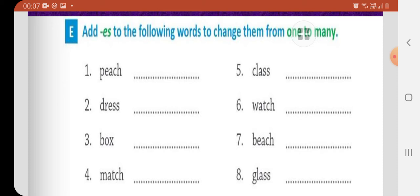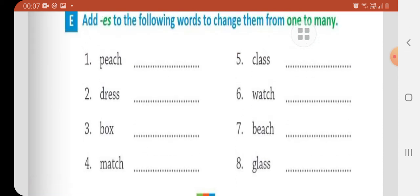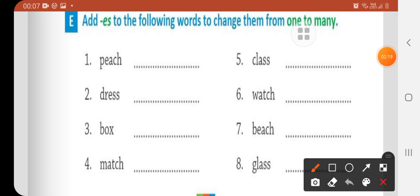Add es to the following words to change them from one to many. Children, you will see here. All nouns are ending with ch, s, x, ch, double s, like this. So we have to add es. Like peach. What is the plural of peach? Peaches. Peach, peaches.